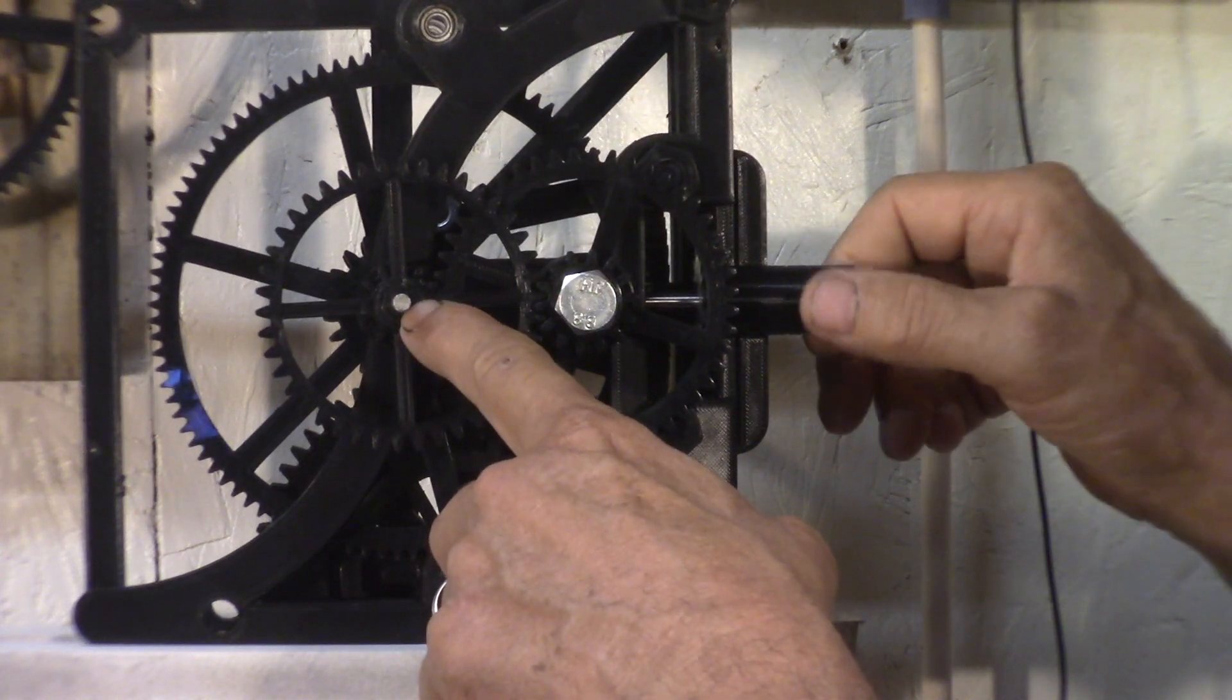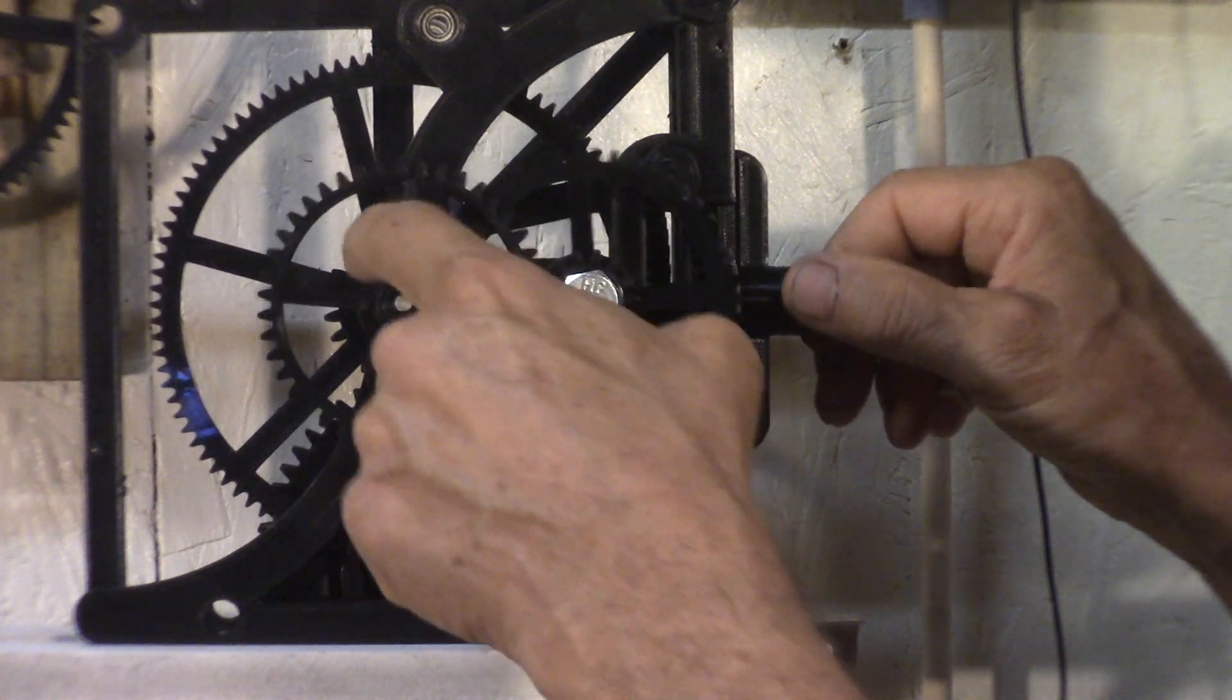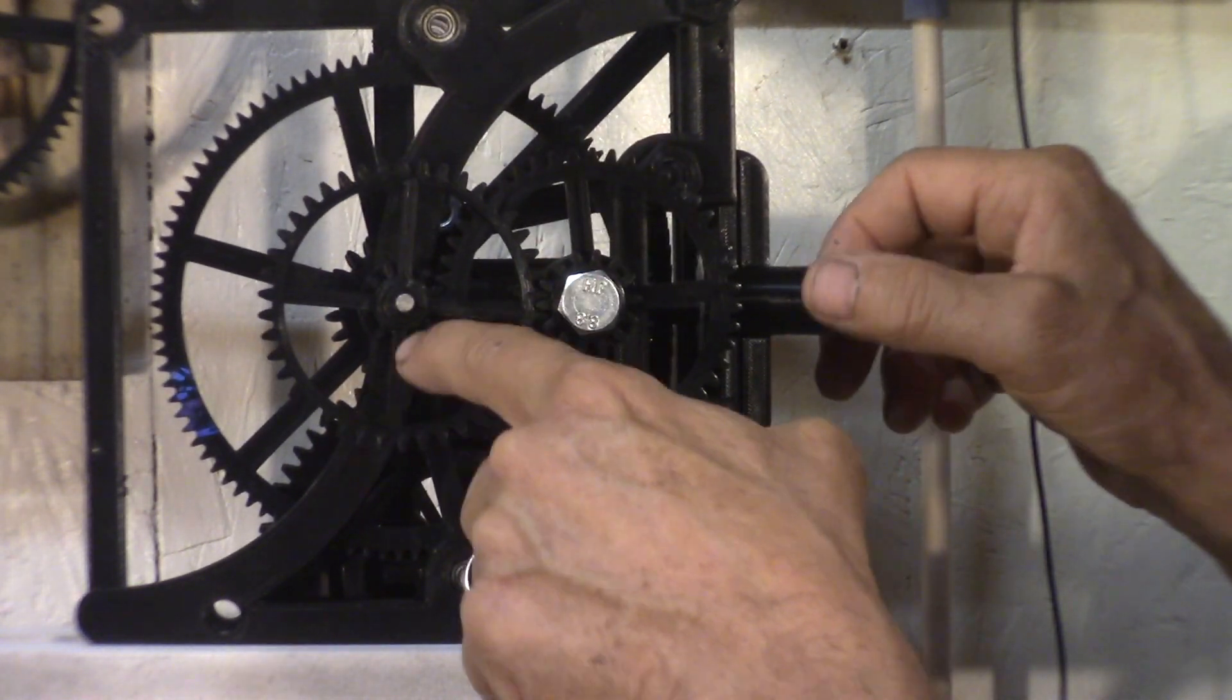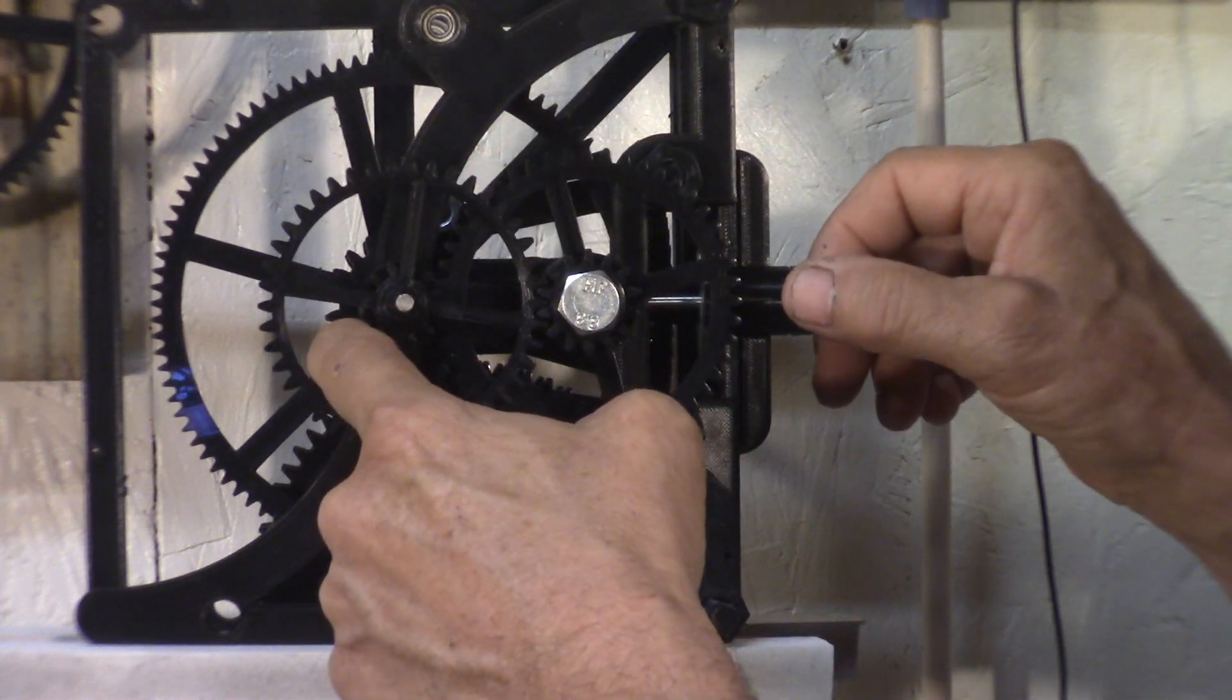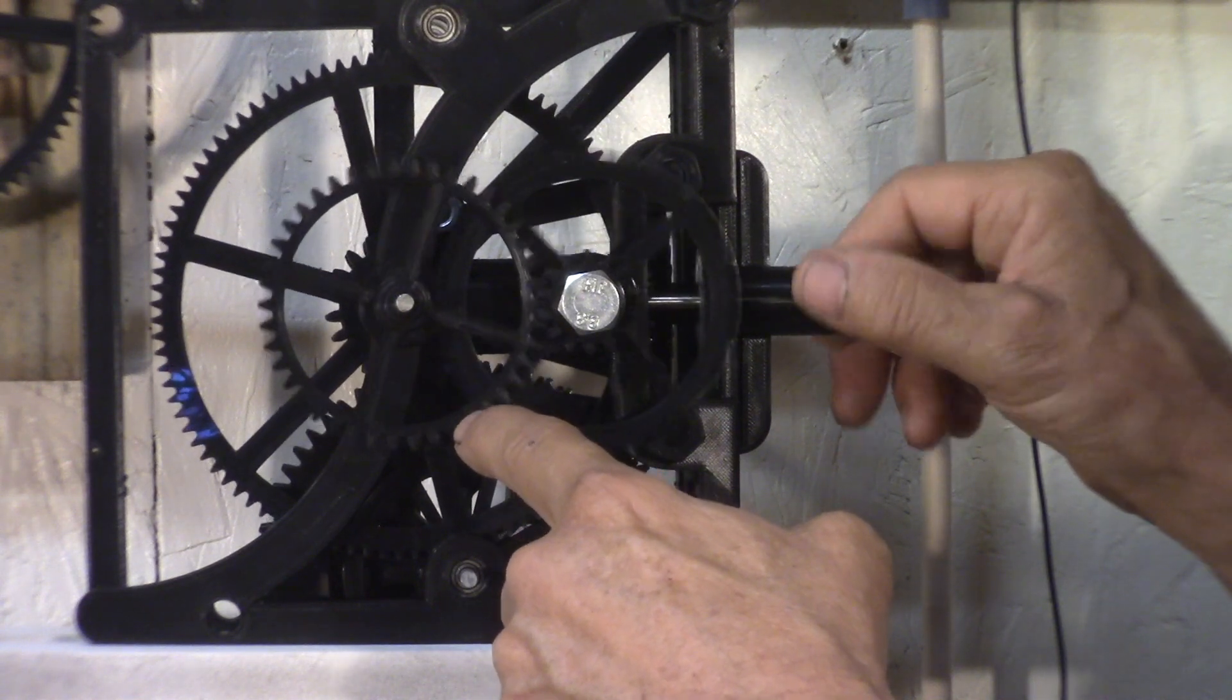The minute gear is in the middle. Attached to this pinion is the, we call it the cannon pinion in a watch. And then this is the hour gear.